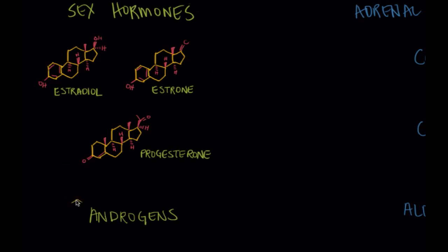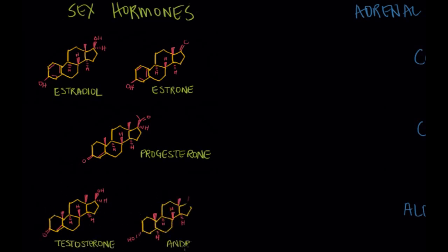And then we have androgens. And we have testosterone and androsterone and similarly to the estrogens those regulate the secondary sex characteristics but more so in males and they're predominantly made in the testes.